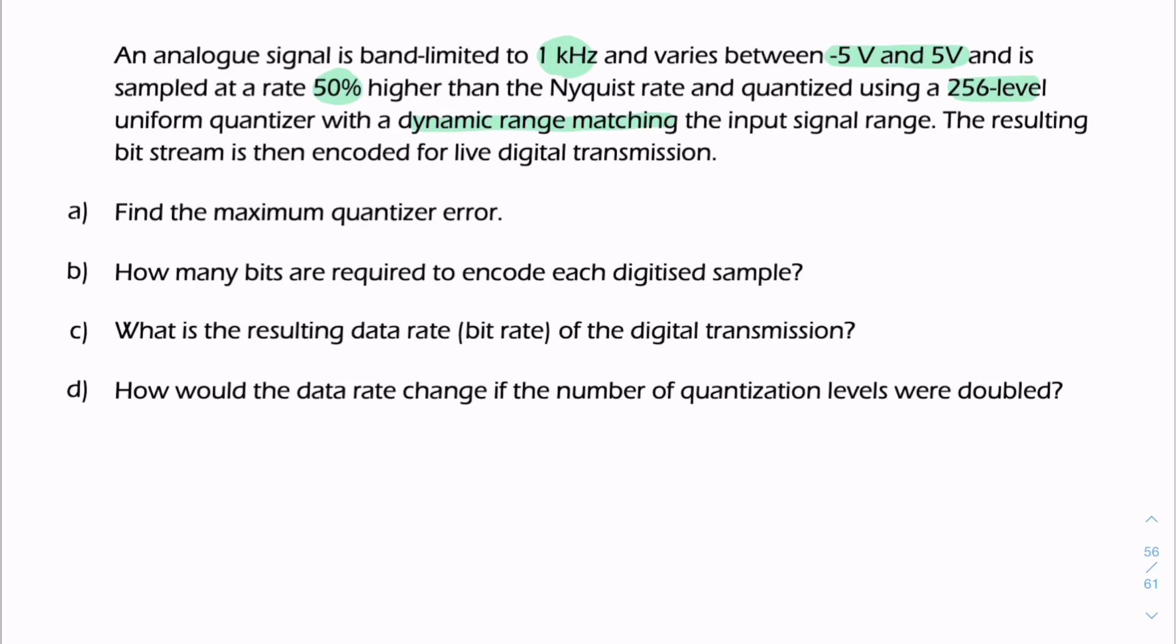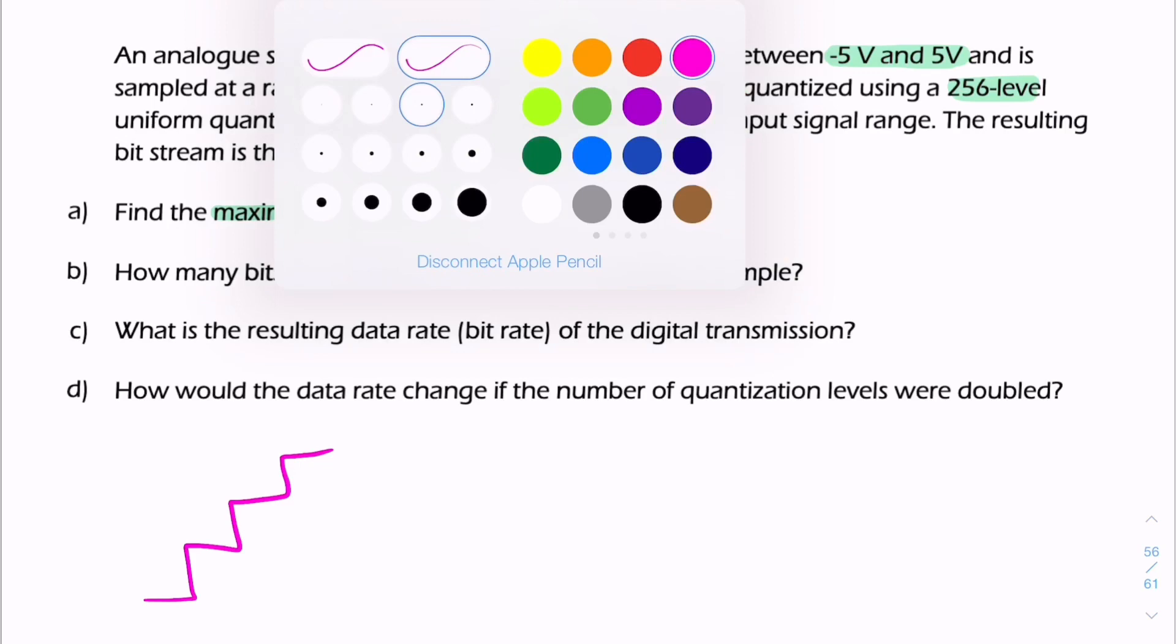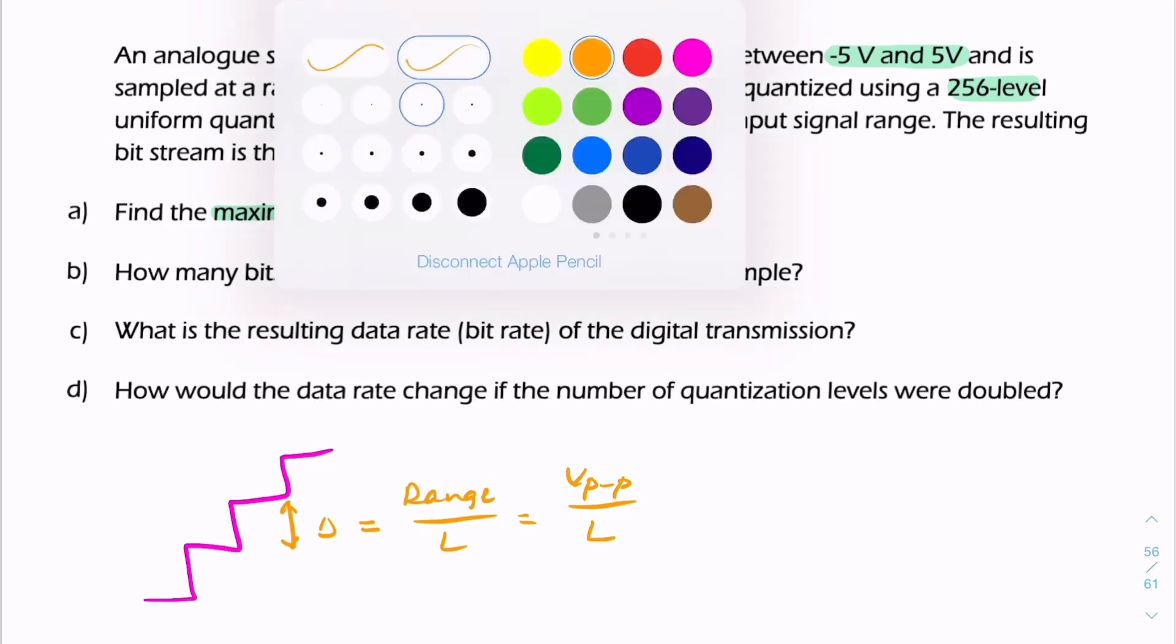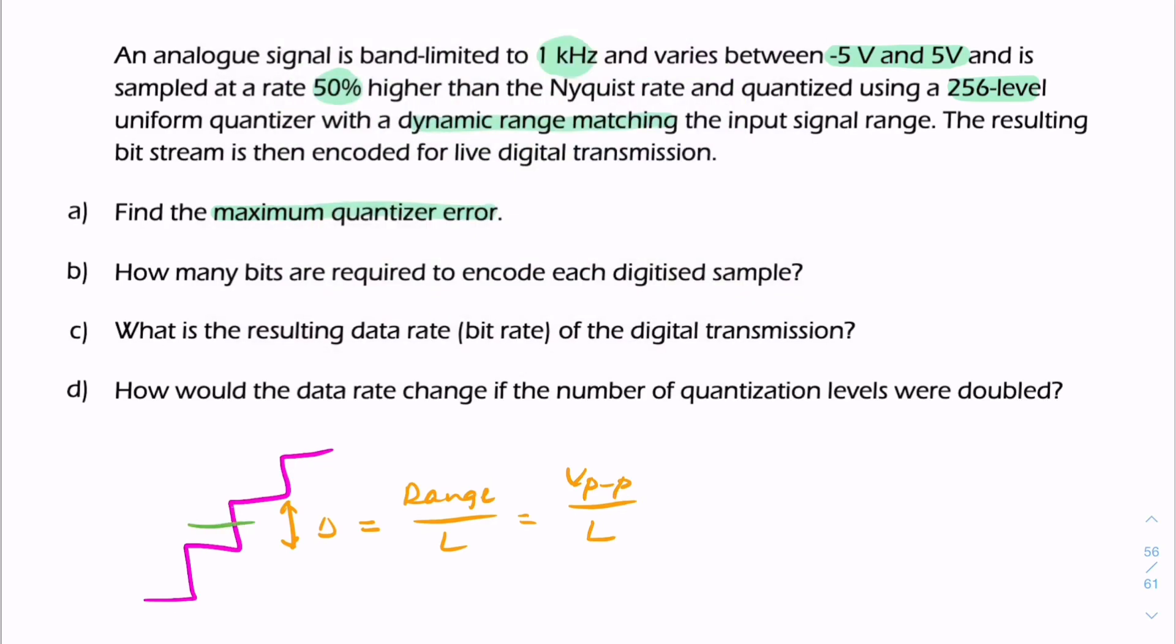The first question is about the maximum quantizer error. The quantizer error is related to the step size. If we have a step size of delta, which we can find by taking the dynamic range of the quantizer, dividing it by the number of levels, and in this case that's the peak-to-peak voltage divided by the number of levels, then the quantization error, the maximum quantization error, will be exactly one-half of that.